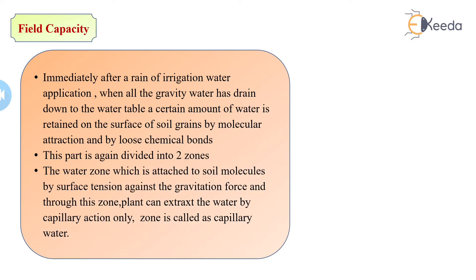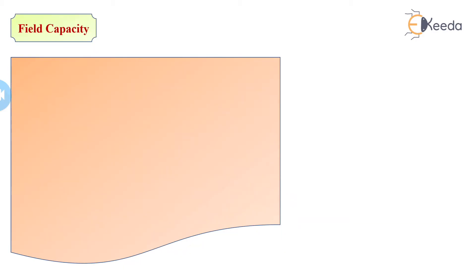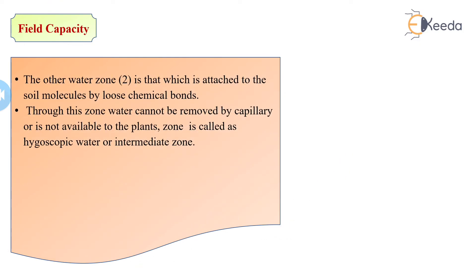The water zone attached to soil molecules by surface tension against gravitational force, through which the plant can extract water by capillary action only, is called capillary water. The second zone is water attached to soil molecules by loose chemical bonds — through this zone, water cannot be removed by capillary action and is not available to the plant. It cannot be extracted and is known as hygroscopic water or the intermediate zone.